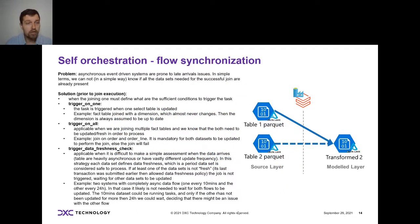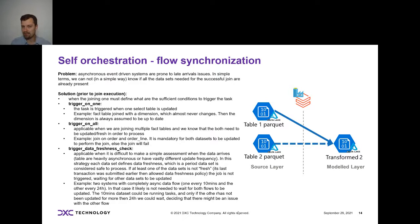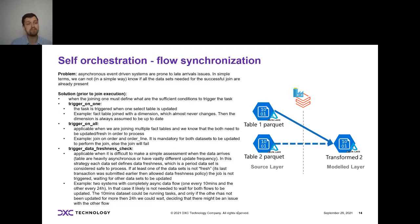There is a bit of a problem with a fully asynchronous event-driven system, though: flow synchronization. Flow synchronization means: if you need to join data from two datasets, when do you trigger the job? Because everything is asynchronous, some data might not have arrived yet. This is a well-known problem, but there are well-defined policies and strategies to solve it. I'll tell you about three of the most common ones. The first is 'trigger on one.'